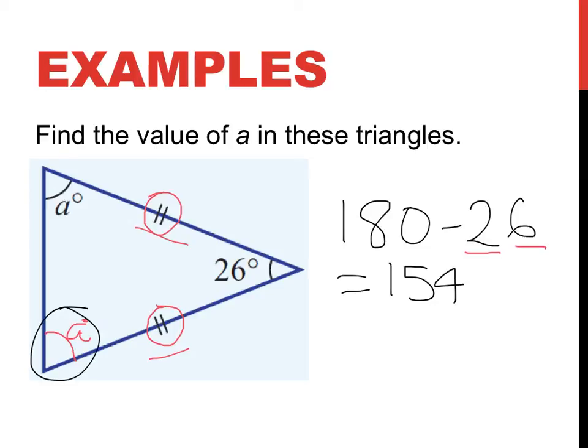So this guy here plus that guy there is 154. So in order to work out what a is if they're both the same size, I divide 154 by 2. And again, I'm going to do it in my head, 150 divided by 2 is 75, 4 divided by 2 is 2, so 75 plus 2 is 77 degrees.